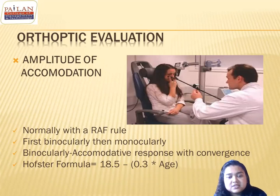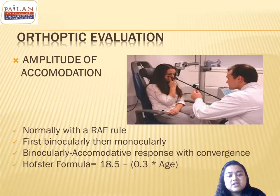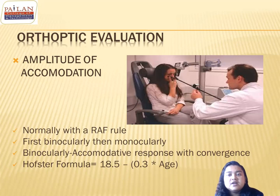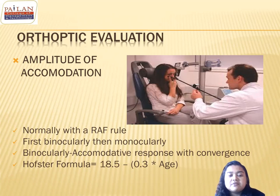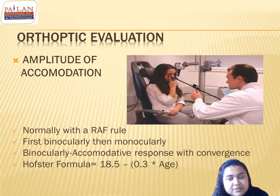We also discussed the amplitude of accommodation, which you measure with the RAF ruler. You correlate it with the patient's age using Hofstetter's formula: 18.5 minus 0.3 times age. For a 10-year-old, that gives 18.5 minus 3, which equals 15.5 diopters. That is the expected amplitude of accommodation for a 10-year-old child. We check accommodation binocularly first, then monocularly.